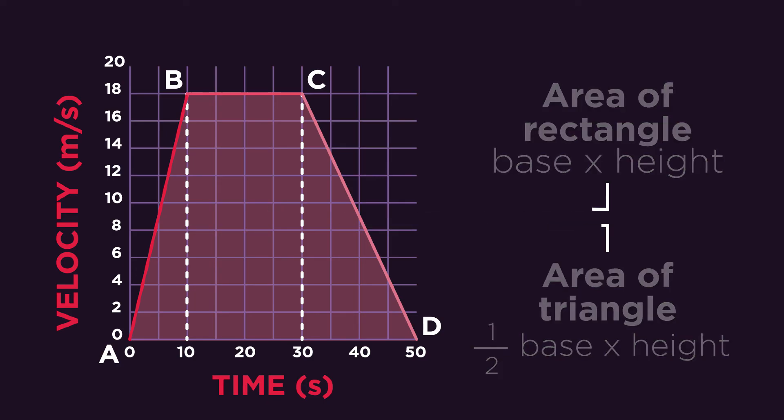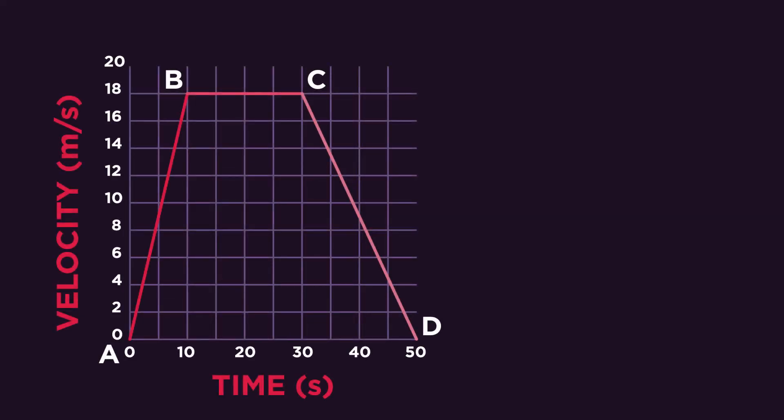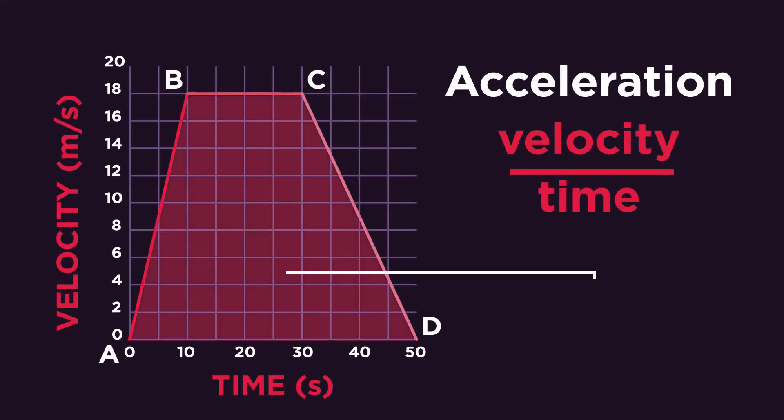Let's see how you did. Part A, a triangle, is calculated by multiplying half by 10 by 18, which equals 90. Part B, by multiplying base 20 by height 18, so 360. And part C is calculated using the same equation as one: half times base 20 by height 18, which equals 180. In total, 90 plus 360 plus 180 means the object traveled 630 meters.